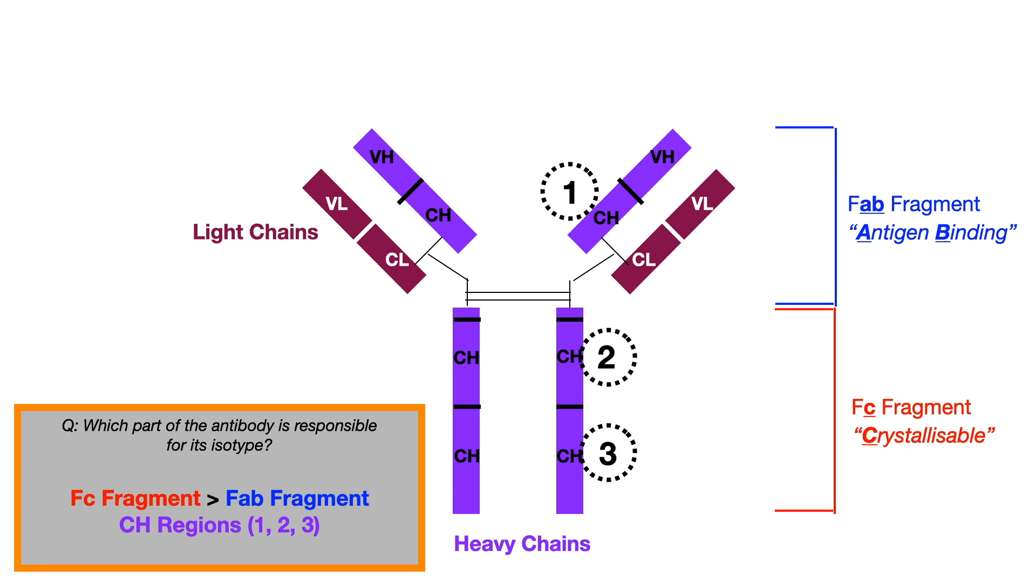And only in the heavy chain, right? Not constant light chain, so not CL. That's a very, very high-yield question, and that's why I put this specific question in my presentation, because people get tripped up on this all the time. A lot of times, they'll incorrectly select the answer choice that says regions 2 and 3, when the most correct answer is regions 1, 2, and 3. So, that is the most important thing to know specific to this question.